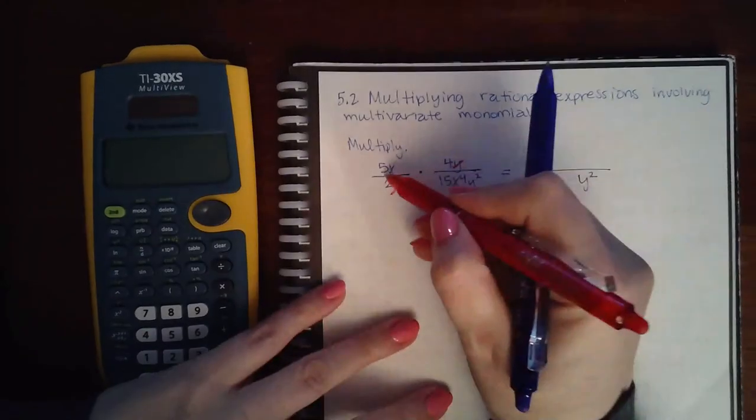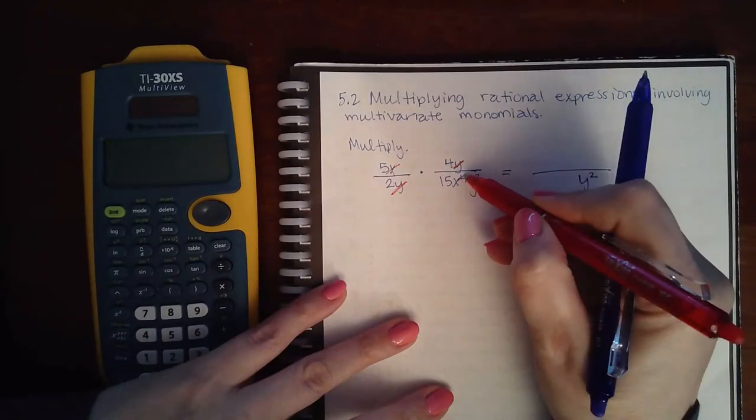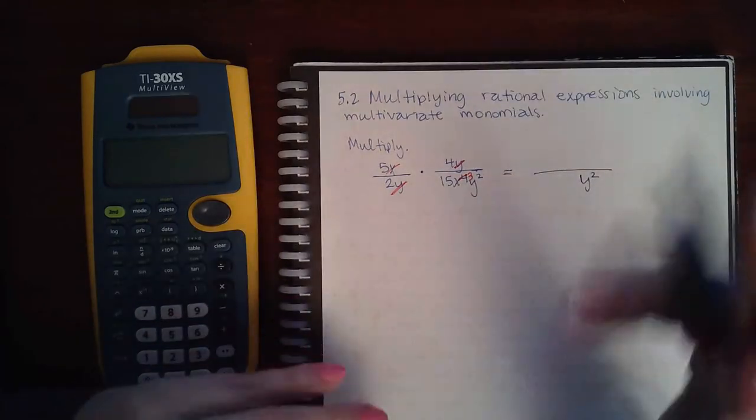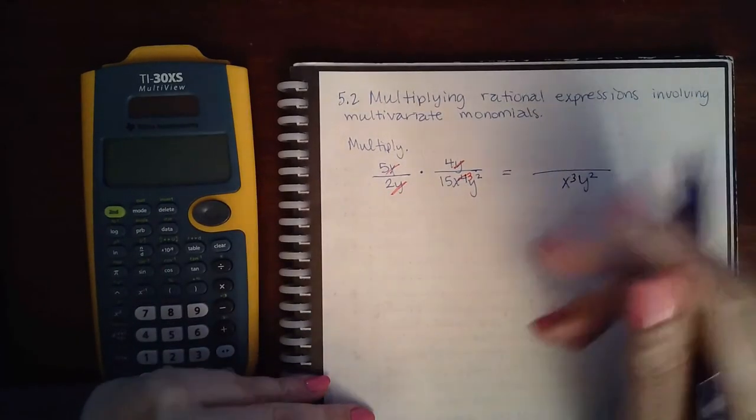I do see an x that I could cancel here, but if I cancel one here, I'm still left with 3, which means I have an x cubed in the denominator.